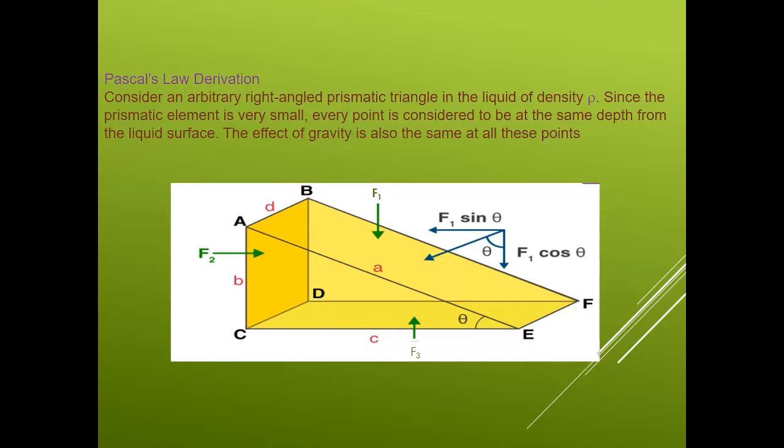So you can see in this diagram, in this figure, force F2 is acting on plane ABDC, force F3 is acting on plane CDFE, and force F1 is acting on plane ABEF. Side AC is B, side AB is D, side AE is A meters, and side CE is C meters.